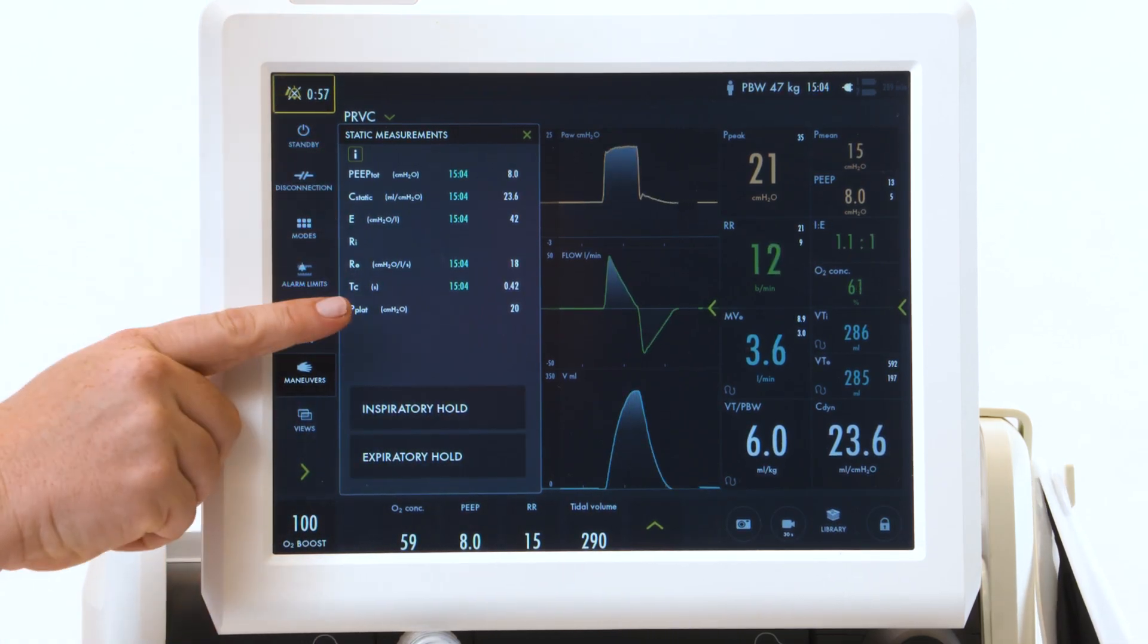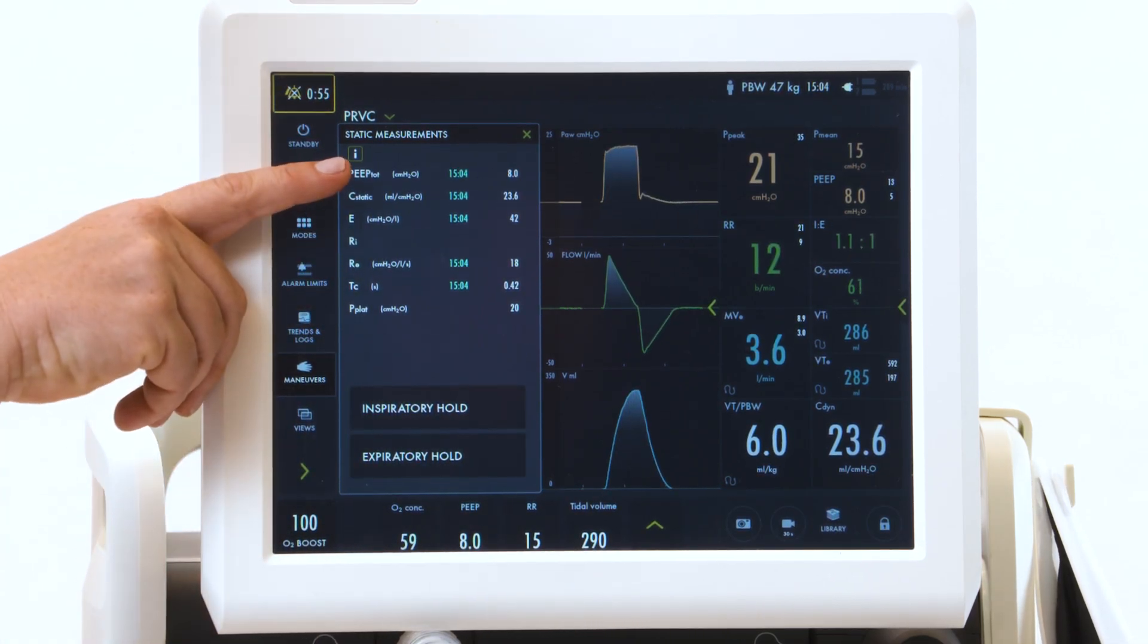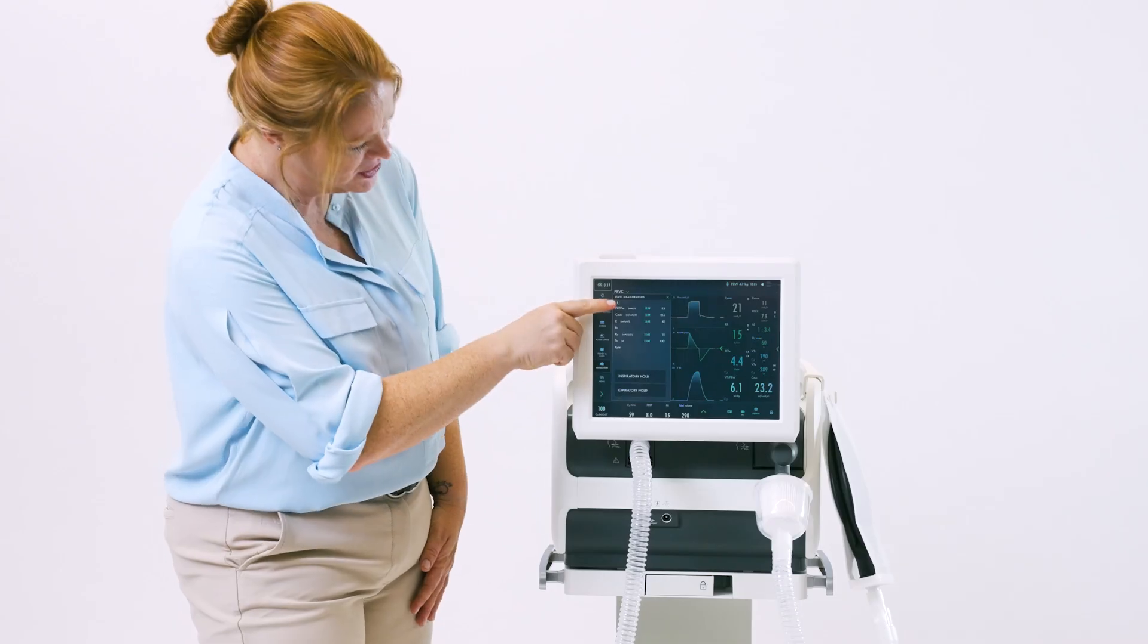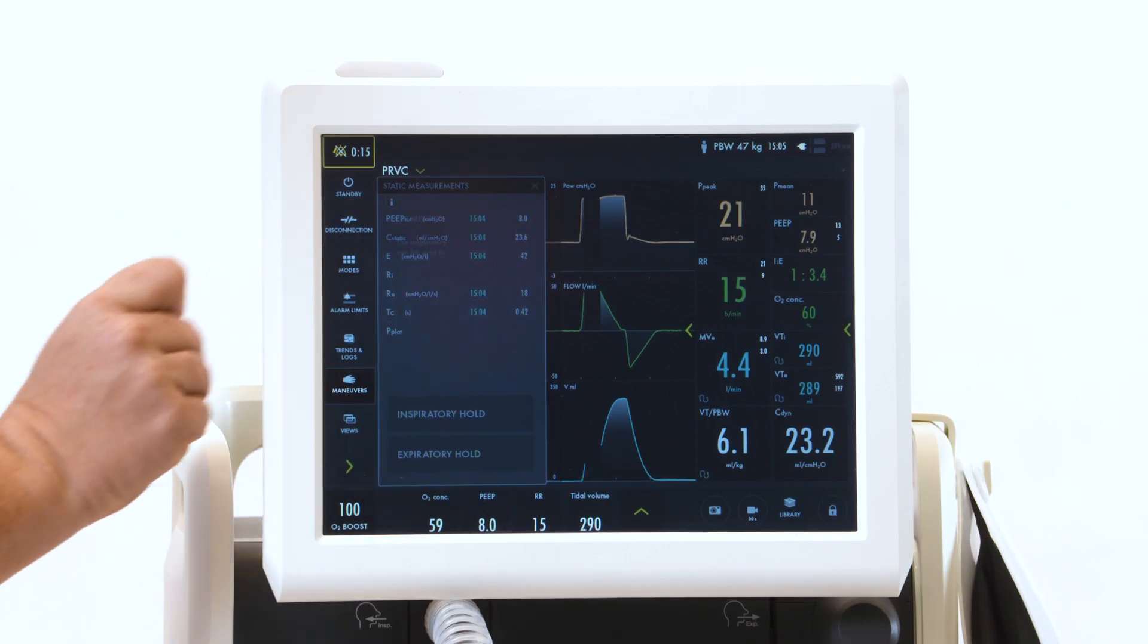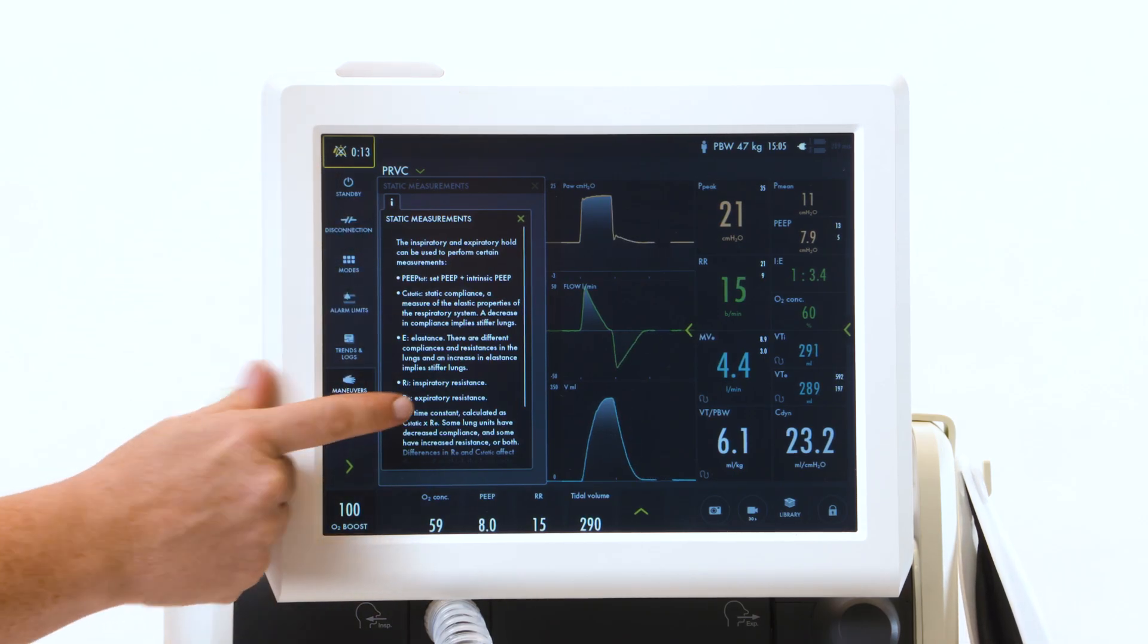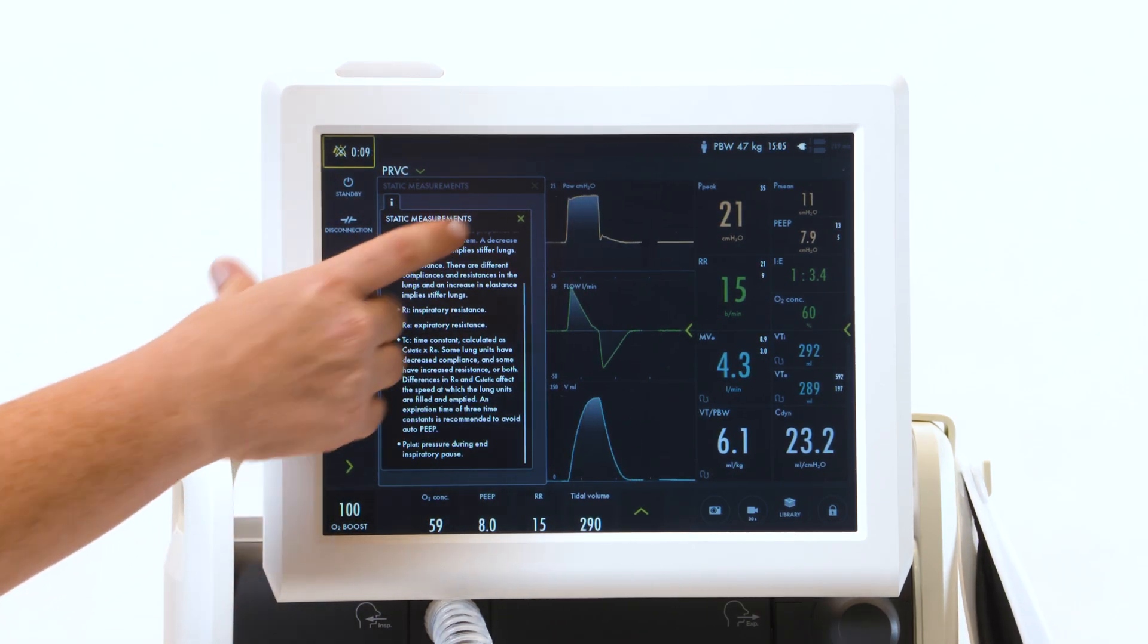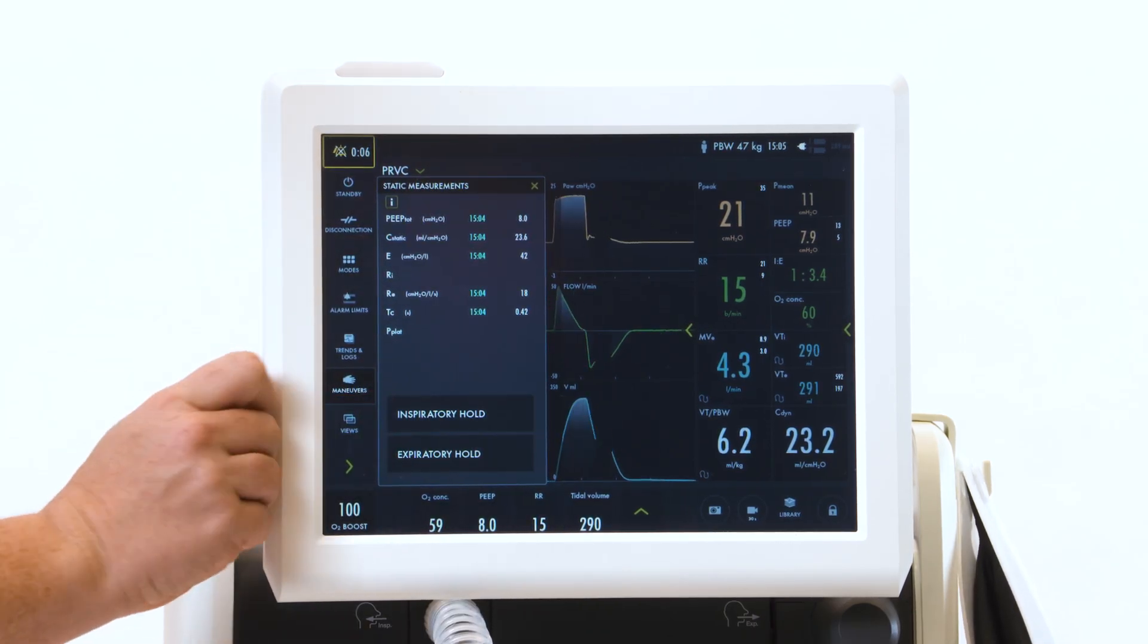Followed by an expiratory hold until it beeps and says active. Your numbers will appear including your total PEEP, your plateau pressure, and your static compliance. Under the eye are the values. You can scroll to get the definitions of all the values which are measured underneath your measurements.